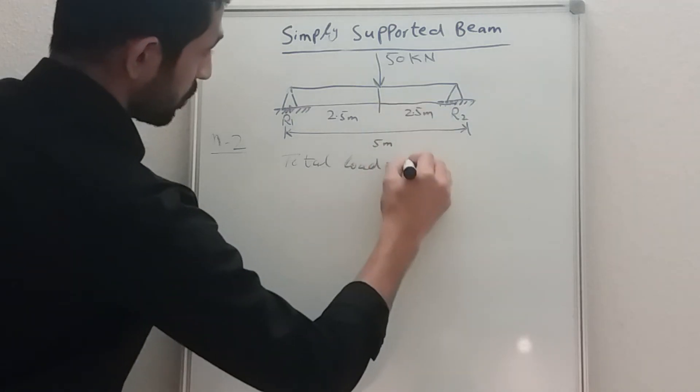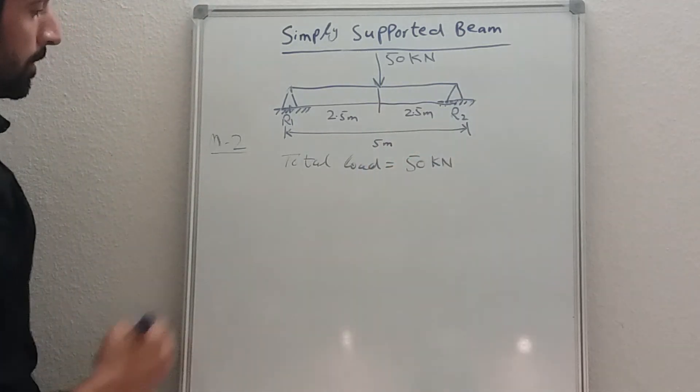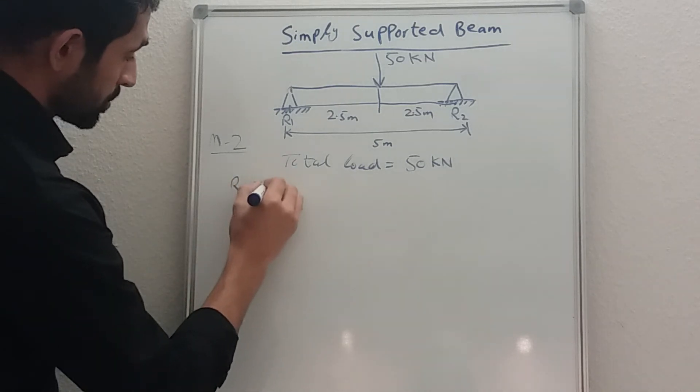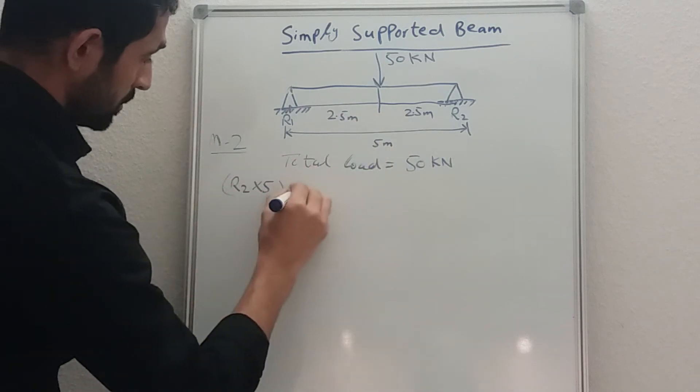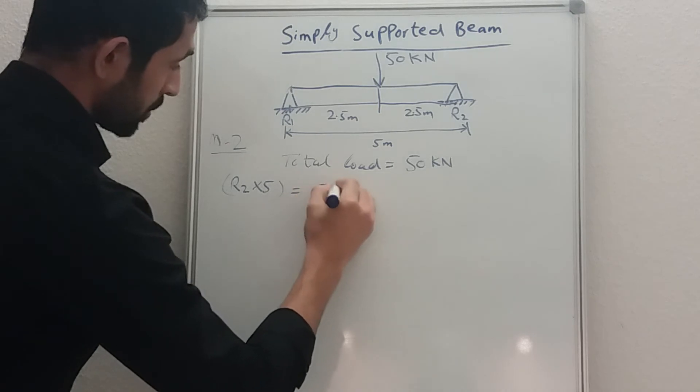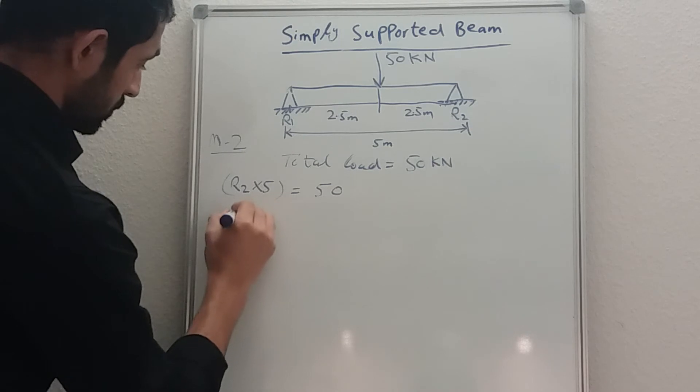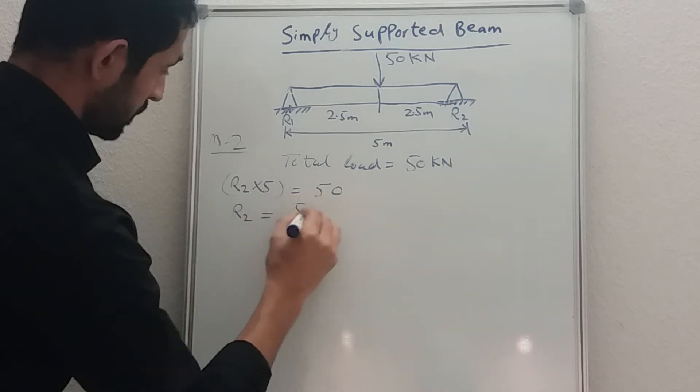Okay, so now R2 times 5, which is the length, is equal to total load. We have 50 kilonewton. Okay, so you have R2 is equal to 50 times 2.5.